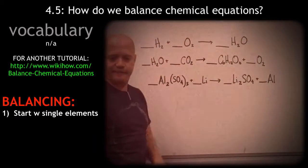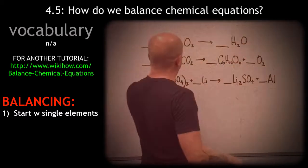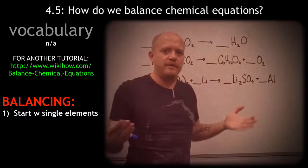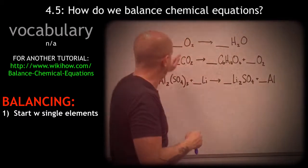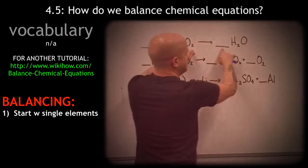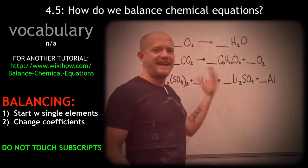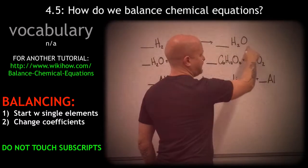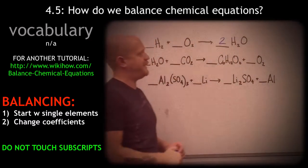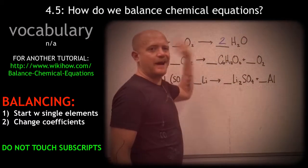In this first equation we're going to find all the hydrogen on the left and all the hydrogens on the right. We have two here and two here — they're equal, so we can't do anything with that. Now let's look at the oxygen: two oxygens here (one times two) and one oxygen here. The only way to make that equal is to change the coefficient, so we're going to write a two right there. Now we have two oxygens and two oxygens.